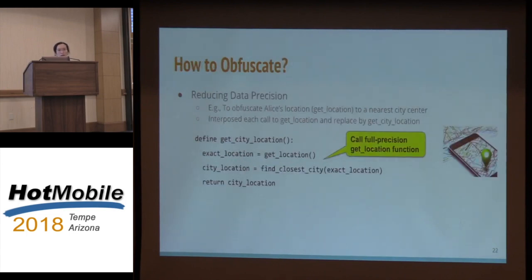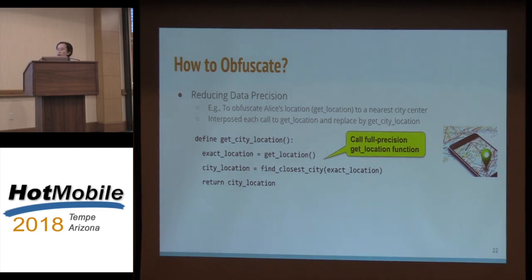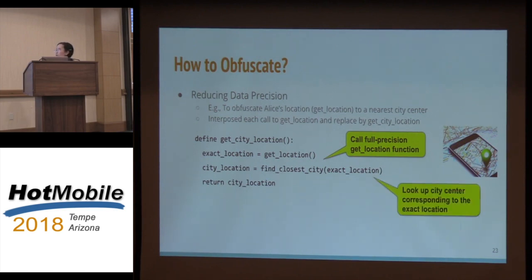How do we obfuscate the data? Two examples. The first is to reduce data precision. Here, I use an example where we obfuscate Alice's location to the nearest city center. The call to get full-precision location is just getLocation. We define a different function called getCityLocation — it first gets the full-precision location, then looks up the city center and returns that location instead. Every single call to getLocation is then intercepted and replaced by a call to getCityLocation.